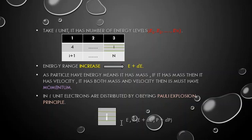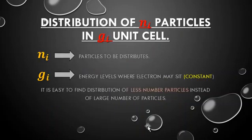In the i-th unit, electrons are distributed obeying the Pauli Exclusion Principle. Each unit has energy levels e1, e2, e3, up to ei. For calculation, we consider a small change of energy dE and a small change of momentum dp. If we have gi unit cells, each with energy levels, and ni particles to be distributed among them, ni is the number of particles and gi is the number of energy levels where an electron may sit.